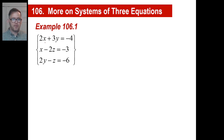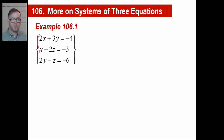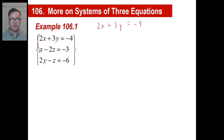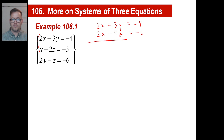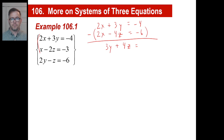Let's make it happen. Let's say we want to eliminate the x's. We'll take these two equations since they both have x's. I'll copy the first one down as-is: 2x plus 3y equals negative 4. To make the second equation also have a 2x so we can subtract, we'll multiply it by 2. So we get 2x, then 2 times negative 2z is negative 4z, and 2 times negative 3 is negative 6. Now we subtract all the way across.